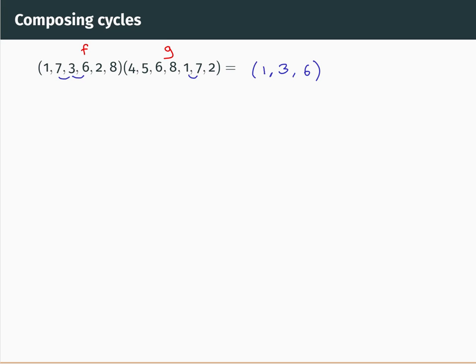Okay, moving on, let's work out another one. So a number which doesn't yet appear in a cycle is two, so let's do two. G sends two to four and then F sends four to four because four isn't in the cycle F. G sends four to five and F sends five to five because five isn't in the cycle F. G sends five to six and F sends six to two. Two is the start of the cycle. So we should close off another cycle and start a third one.